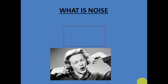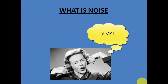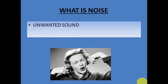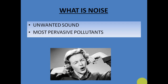So what is noise? What is this lady trying to avoid? Yes, the lady is trying to avoid some kind of loud noise because she doesn't like it — it is not very soothing to her ears. This kind of unwanted sound is known as noise, and this noise is the most pervasive pollutant in our environment. It pollutes our environment. Noise is any unwanted sound to our ears.